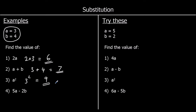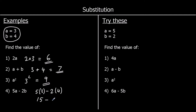And question 4: 5a minus 2b. So 5a means 5 times a, so I'm going to write that as a bracket: 5 times 3, minus 2 times b, and b is 4. So 5 times 3 minus 2 times 4. 5 times 3 is 15, and 2 times 4 is 8. So we've got 15 take away 8, which is 7.